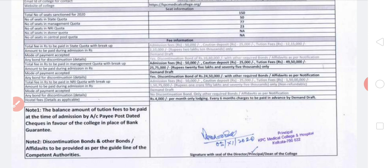Now the total fees to be paid in NRI quota: admission fees is ₹50,000, caution deposit is ₹25,000, and the tuition fee is ₹1,50,00,000 (150 lakhs). The entire amount needs to be paid during admission — ₹1,50,00,000 for tuition, plus ₹50,000 admission fees and ₹25,000 caution deposit — totalling ₹1,50,75,000. Mode of payment is demand draft. There is no bond for discontinuation because the entire amount is paid upfront.